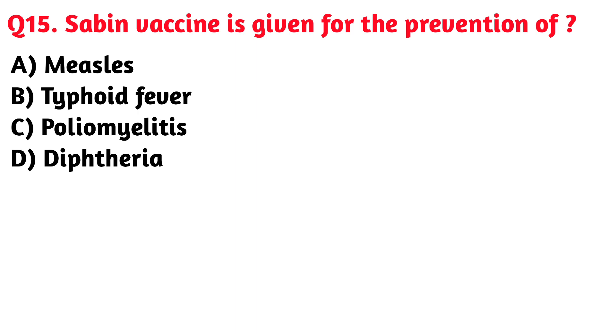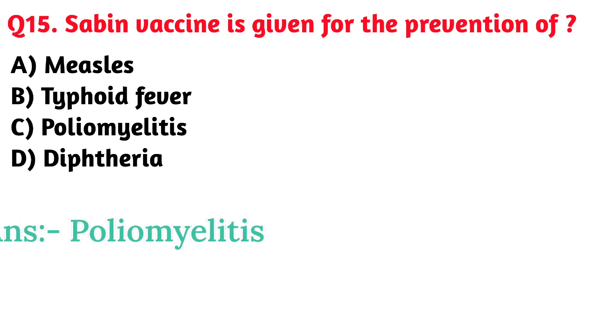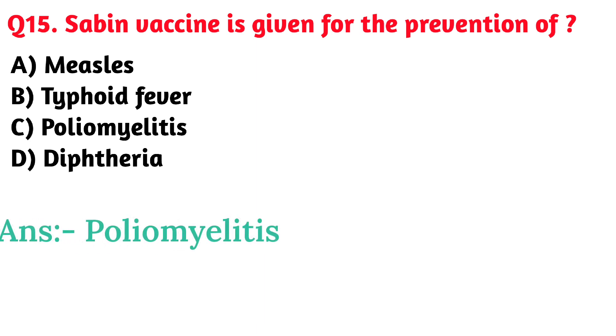Next question: Sabin vaccine is given for the prevention of. Option C. Poliomyelitis is the correct answer.